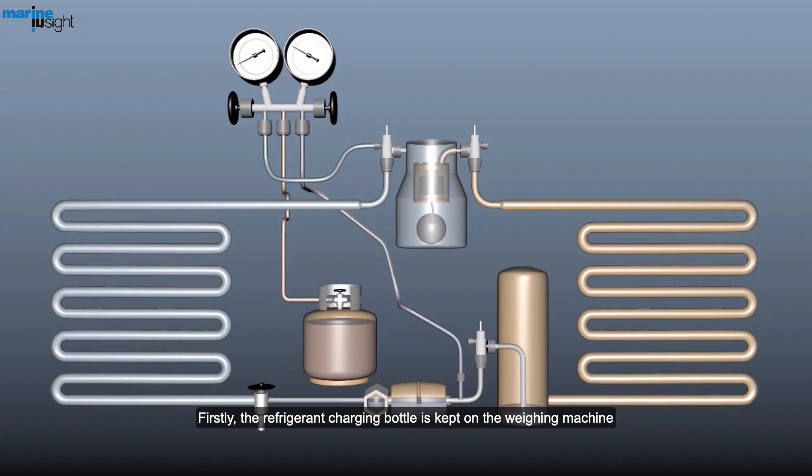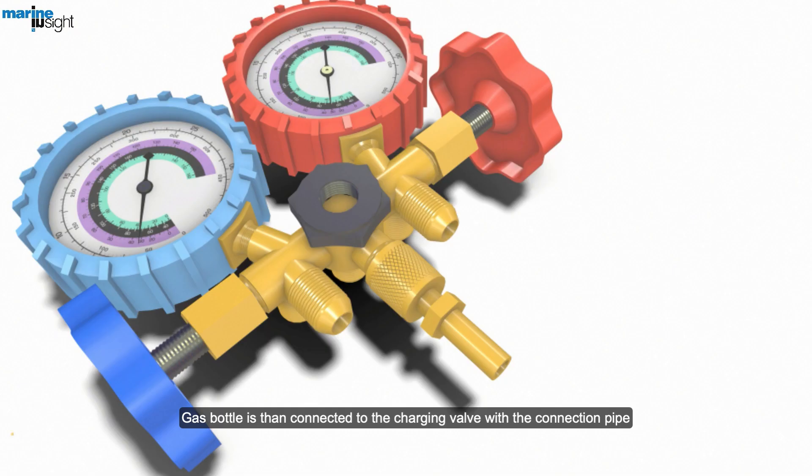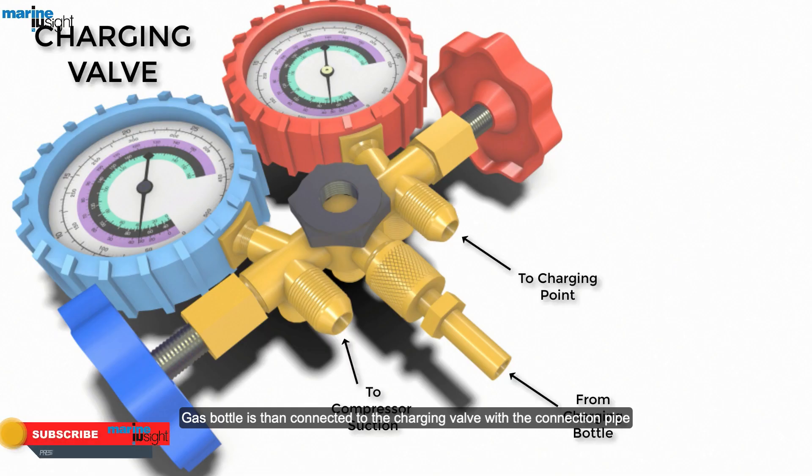First, the refrigerant charging bottle is kept on the weighing machine. The bottle is then connected to the charging valve with the connection pipe.